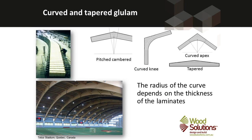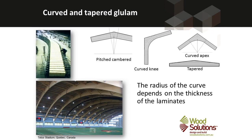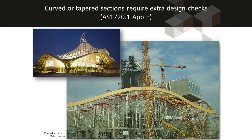Curved and tapered glulam requires special design treatment, as the curve introduces stresses in the timber and those stresses must be taken account of in the design process. Appendix E of AS1720 Part 1 gives us the tools to do those analyses. We can achieve quite large spans with curved glued laminated members, and artistic structures are also possible — again all of these can be designed using the tools in AS1720 Part 1 Appendix E.